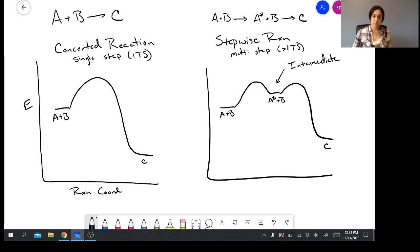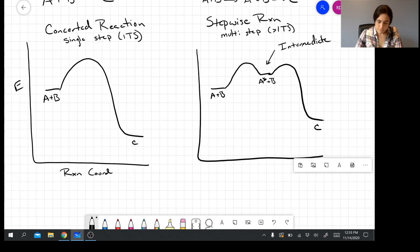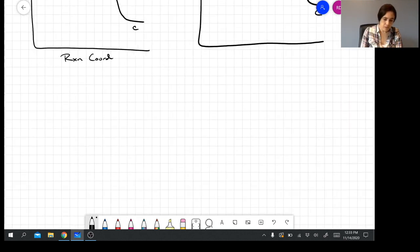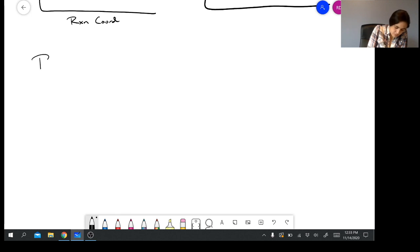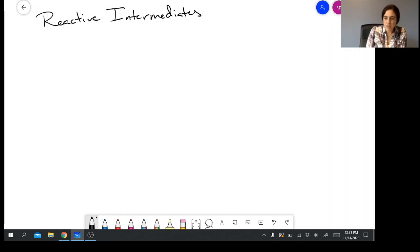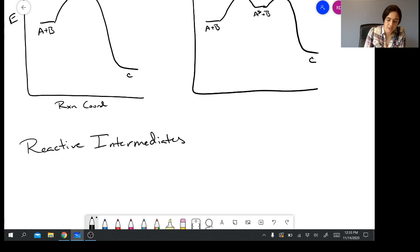It doesn't exist for a long period of time, but it is a species that exists on the potential energy surface. There are different classes of reactive intermediates. We generally consider these anything that has a carbon that does not have four bonds, or has less than an octet of electrons, or is potentially just highly strained. You'll notice that intermediates are higher in energy than the starting material or the product.